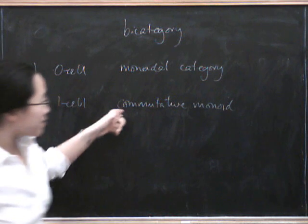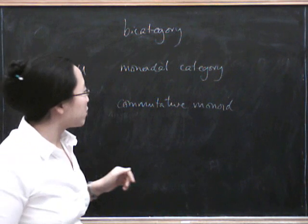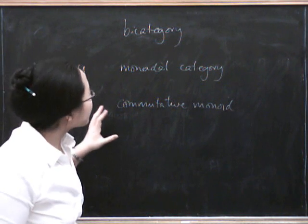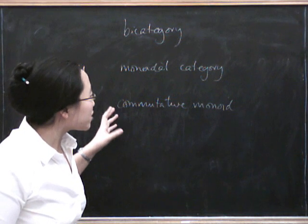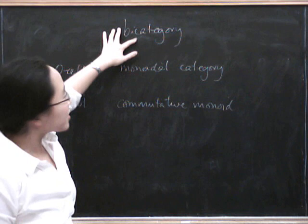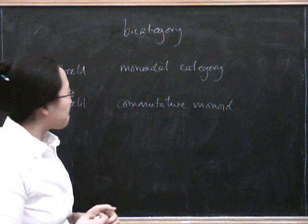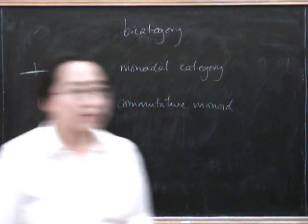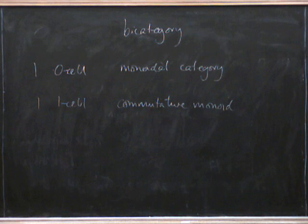You actually get something more complicated than a commutative monoid because you also have a distinguished invertible element left over from the unit constraint in the bicategory. But I won't go into that now.